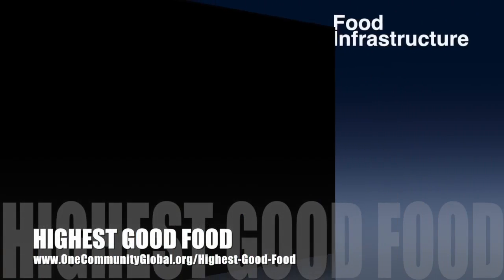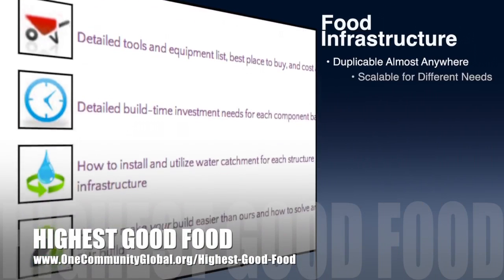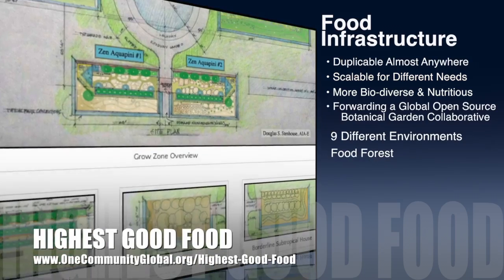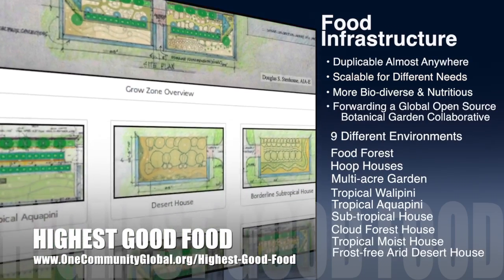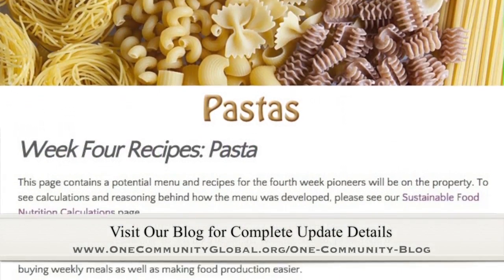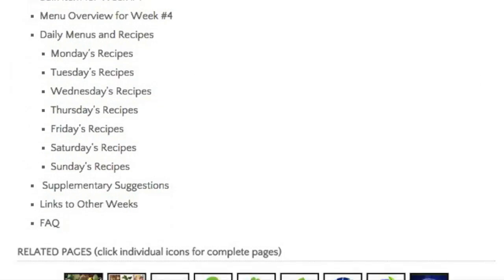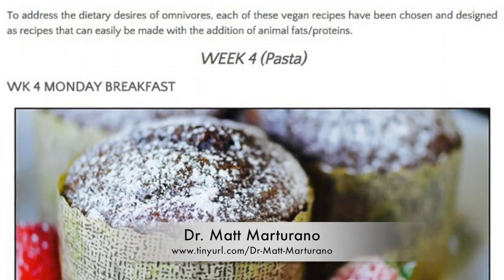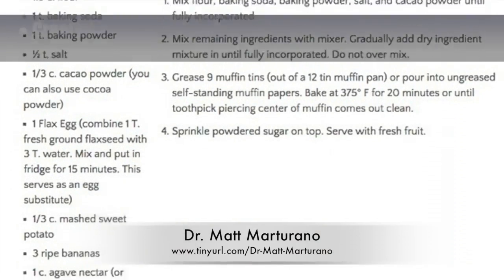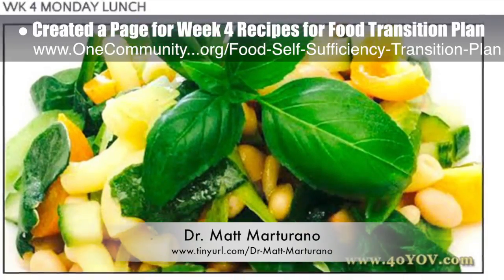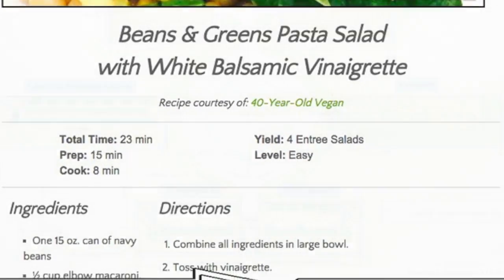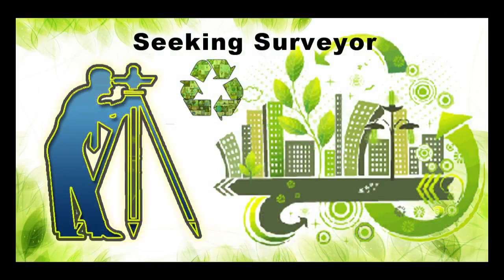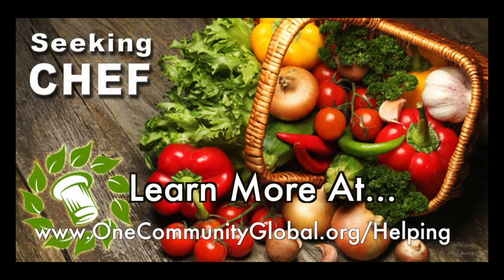One Community's approach to highest good food is duplicable almost anywhere, scalable for different needs, more biodiverse and nutritious, part of forwarding a global open source botanical garden, collaborative, and includes nine different free shared and duplicable growing environments. This week the core team completed another round organizing the streamlined version of our food self-sufficiency transition plan page, which includes contributions by naturopathic doctor Matt Martorano, creator of the coherent model for comprehensive digestive health. We further organized recipes including creating a page for week 4 recipes — organization is now approximately 95% complete. We are seeking permaculturalists, an irrigation specialist, a surveyor, and a chef to join our team.